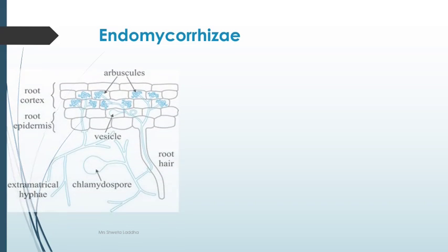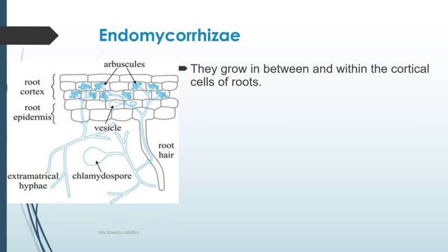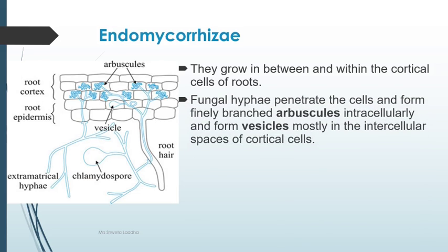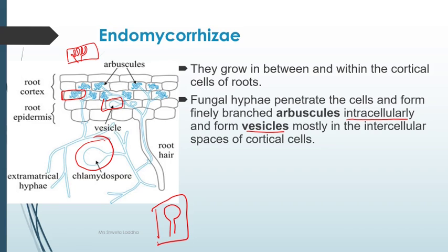The second type is endomycorrhizae. In endomycorrhizae, the fungi grow in between and within the cortical cells of the roots. Fungal hyphae penetrate the cells and form finely branched arbuscules intracellularly. Inside the cortical cell, this type of branching of the mycelial hyphae is called arbuscules. They may also form vesicles — pouch-like structures formed in the cortical cells.